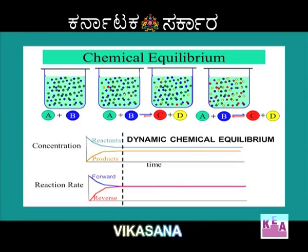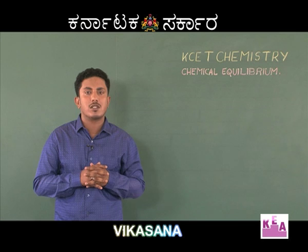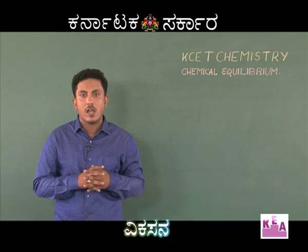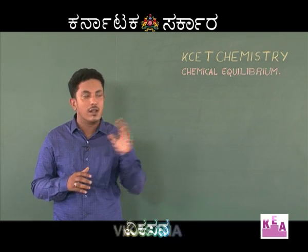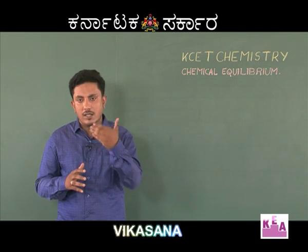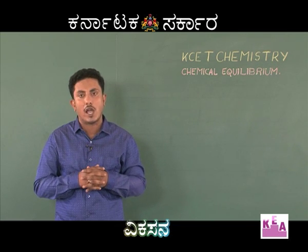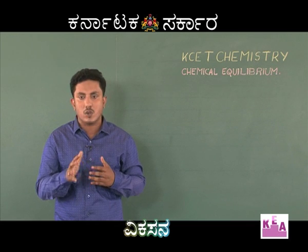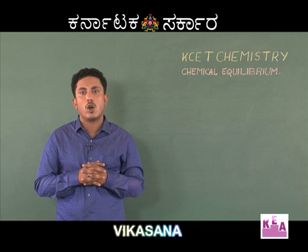Today I will be dealing with some concepts related to chemical equilibrium. You are aware that chemical equilibrium is a very important chapter from CET point of view. Today we will be discussing concepts related to Kp as well as Kc, how to calculate Kp and Kc of a reaction. We will also be dealing with Le Chatelier's principle, how to calculate pH of a solution, what are buffer solutions and how to calculate the pH of a buffer solution, and the solubility product.